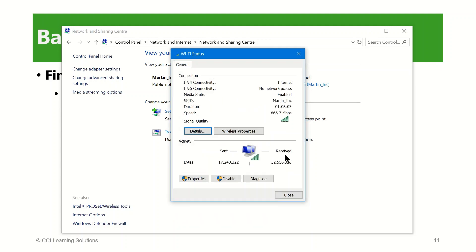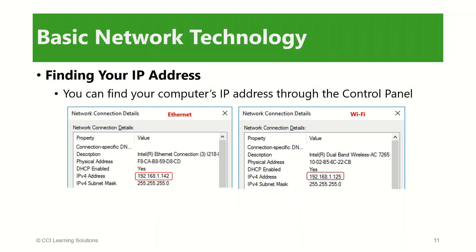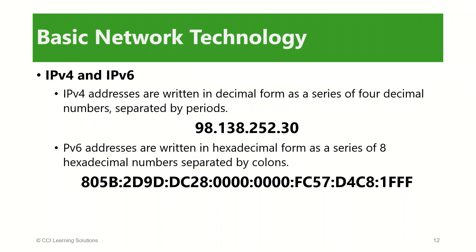There are two versions of Internet Protocol: version 4, or IPv4, and version 6, or IPv6. IPv4 is used predominantly in North America and Europe, while IPv6 is used in Asia and other countries. Because the number of available IPv4 addresses is rapidly running out, support for IPv6 is a requirement. IPv4 addresses are written in decimal form as a series of four decimal numbers separated by periods, while IPv6 addresses are written in hexadecimal form as a series of eight hexadecimal numbers separated by colons.